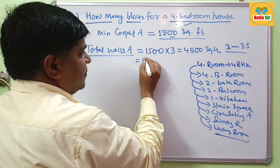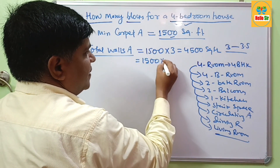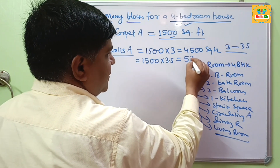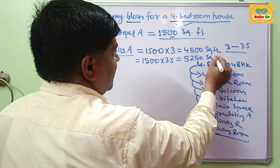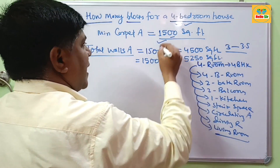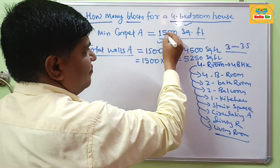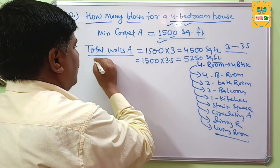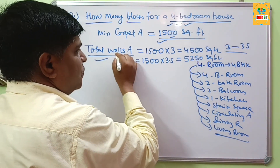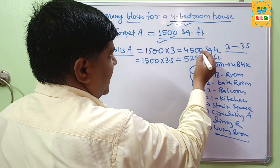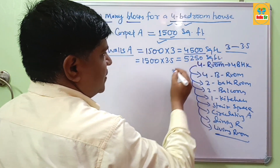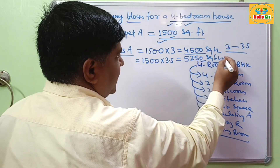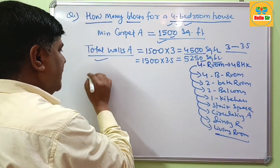If you multiply 1500 by 3.5, this becomes about 5250 square feet. So for a 4-bedroom house with a carpet area of 1500 square feet, the total walls area — including interior and exterior walls — is approximately 4500 to 5250 square feet.